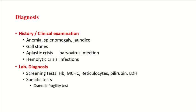How do we diagnose these patients? On history, there will be history of anemia, aplastic crisis, hemolytic crisis, and jaundice. On examination, we can find splenomegaly and gallstones. Screening tests: hemoglobin will be decreased, reticulocyte count will be increased, bilirubin levels will be increased, and LDH level will be increased. The specific test for hereditary spherocytosis is the osmotic fragility test, which we will discuss in detail in our next lecture.